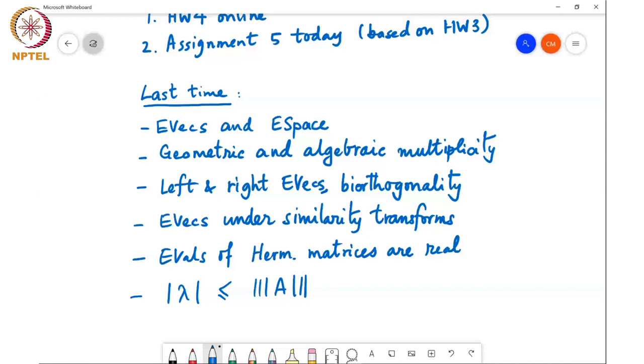of a matrix, then any left eigenvector of the matrix corresponding to the first eigenvalue is going to be orthogonal to any right eigenvector of the matrix corresponding to the other eigenvalue. And we also looked at how eigenvectors get changed under a similarity transform.